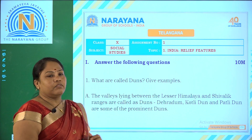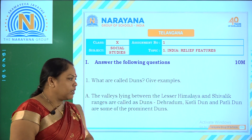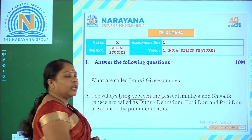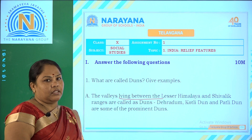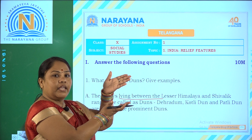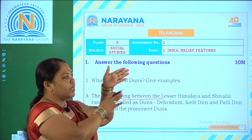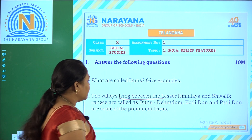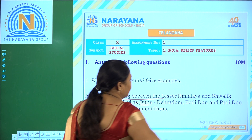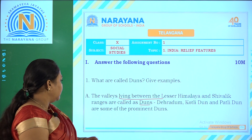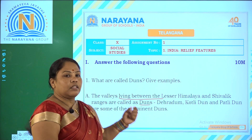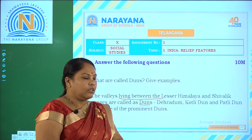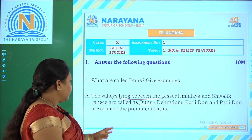What are called Duns? Give example. The valleys which are lying between the Lesser Himalayas and the Shivaliks are called Duns. Dehradun, Kotlidon, and Patlidon are the important prominent Duns.